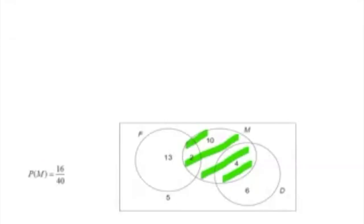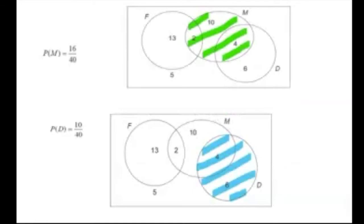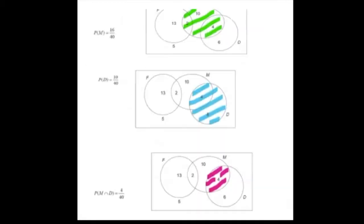The probability of M is the green region — the 10, the 2, and the 4 — so P(M) is 16 out of 40. The probability of D is the blue region, the 4 and the 6, which is 10 out of 40. The intersection of M and D is the purple region, giving P(M∩D) = 4 out of 40.